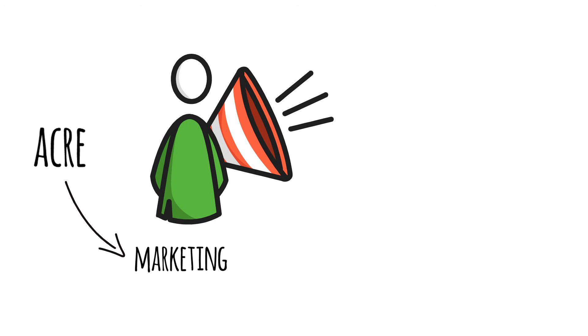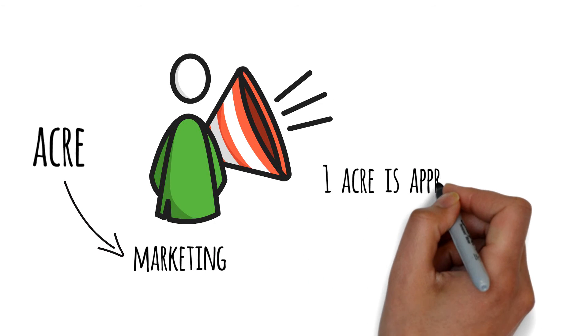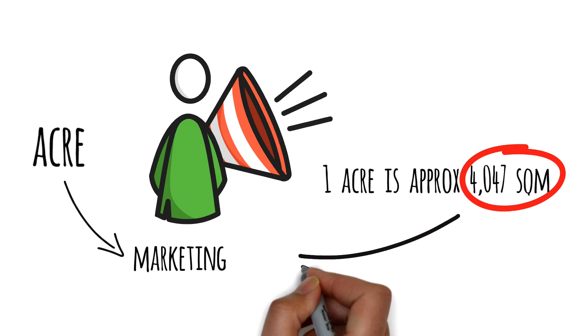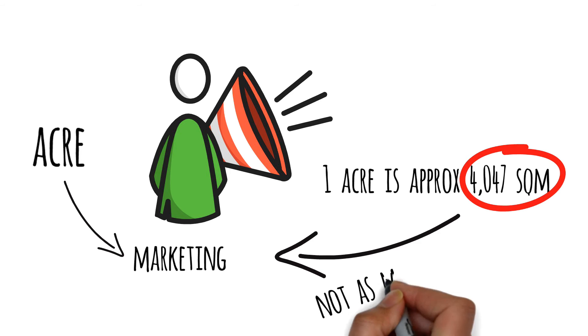So if we convert an acre to square meters, which is a metric unit, it's approximately 4,047 square meters. It's much easier and more marketable to say an acre than by saying 4,047 square meters, right?